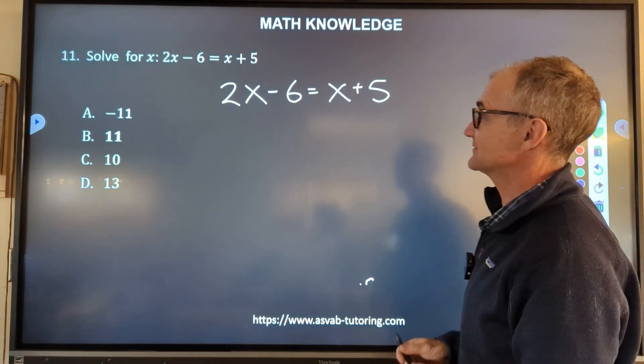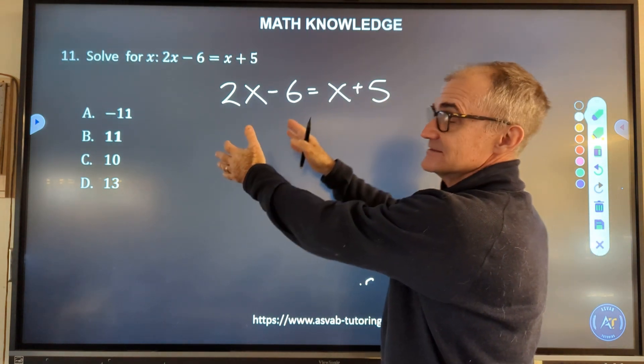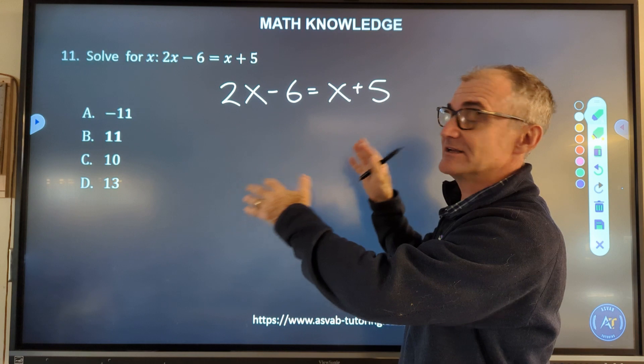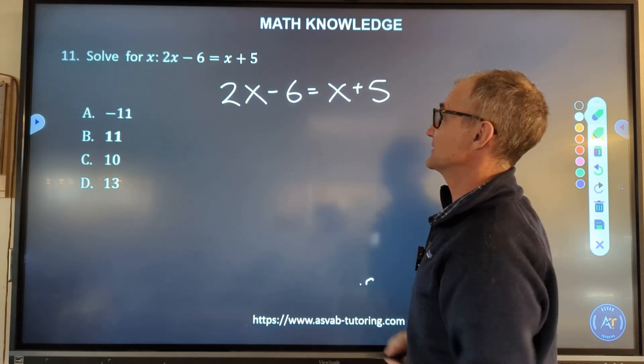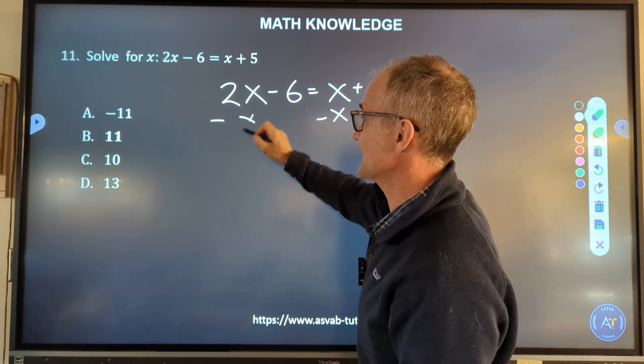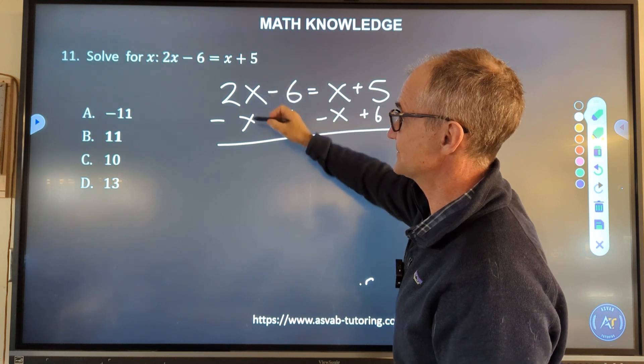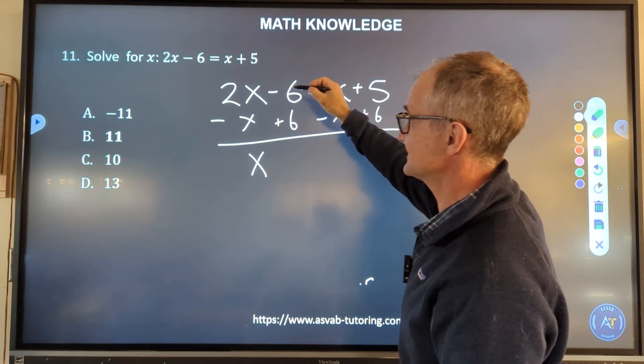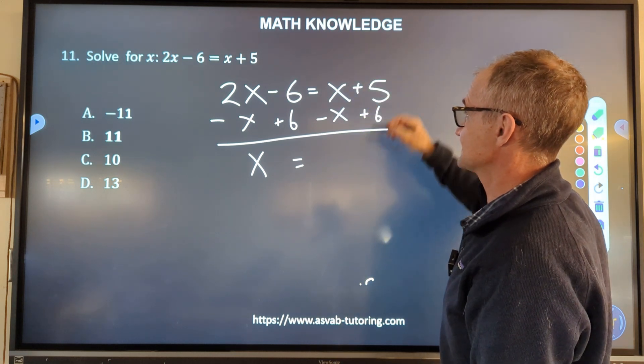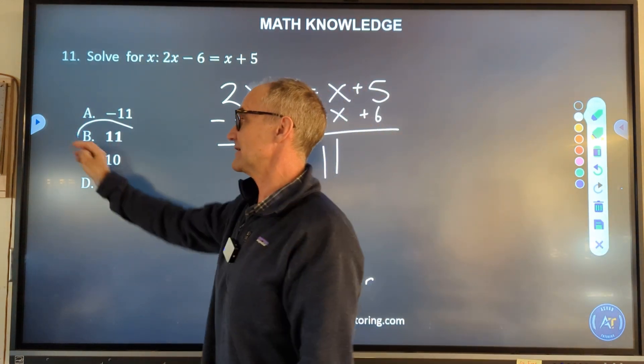So I'm trying to get x by itself. I could do it two ways. I can move all the x's to this side or all the x's to this side. The key in algebra is you do whatever you want as long as you do it to both sides of the equation. So I'm going to subtract x from both sides, and then I'm going to add 6 to both sides. That's going to give me 2x minus x is 1x. Negative 6 plus 6 cancels. My x's here cancel. 5 and 6 is 11. That's my answer, answer B right there.